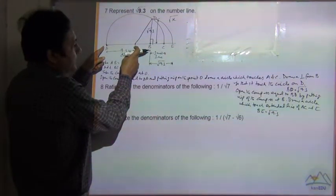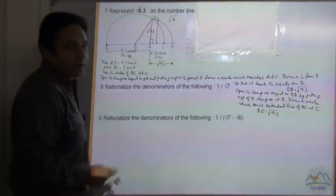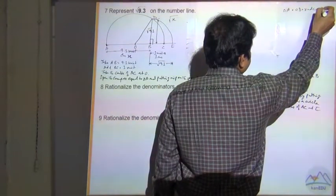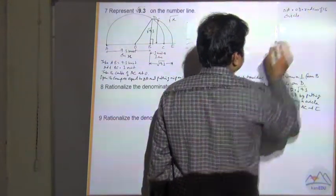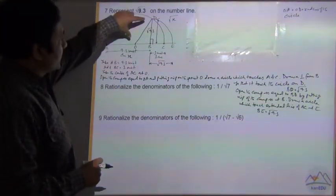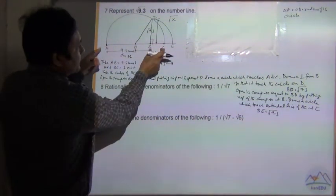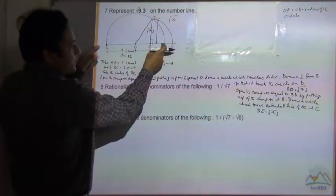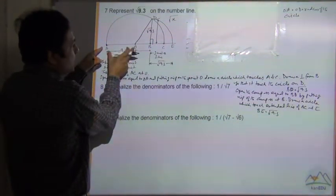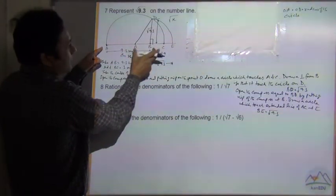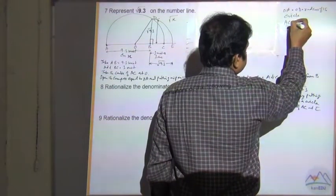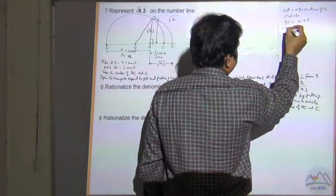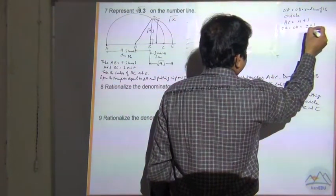OD is equal to the radius of the circle. Since AC is the diameter and AB equals x and BC equals 1, the radius OA or OD is equal to x plus 1 divided by 2. And OB, which is radius minus BC, equals x plus 1 divided by 2 minus 1.